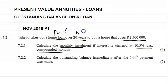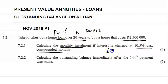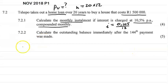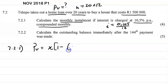The loan is over 20 years, so n is going to be 20 times 12, because the payments are made monthly, giving n = 240. The interest rate i is 10.5% per annum compounded monthly, so i = 0.105 divided by 12. The present value formula is PV = x times [1 minus (1 + i)^(−n)] all over i.